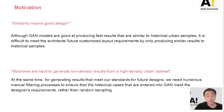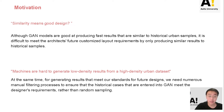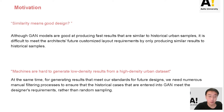Although GAN models are good at producing faster results that are similar to historical urban samples, it is difficult to meet architect's future customized layout requirements. Our next step is to make the generation process of GAN controllable by the architect. At the same time, we need a lot of manual filtering to ensure that the historical samples entered into the GAN model meet the designer's requirements rather than being random sampling.